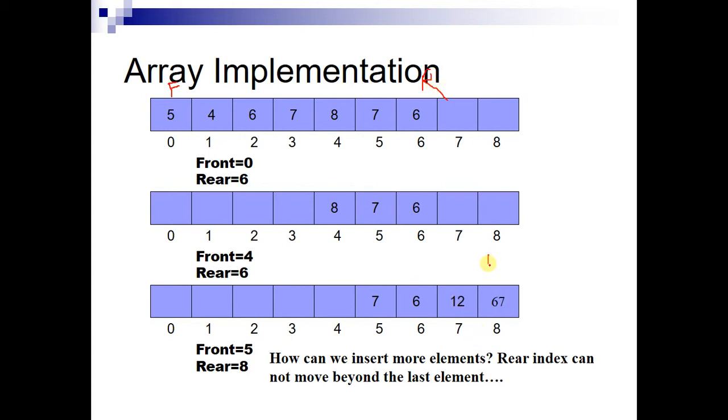Whenever these entries are dequeued, I mean they are served, the front pointer will move forward. When five is dequeued, F will come here. When four will be dequeued, F will come here. Finally, when all these are dequeued, F pointer will come here. So we will increment front pointer when the elements are served or dequeued, and we will increment the rear pointer when new entries are added.